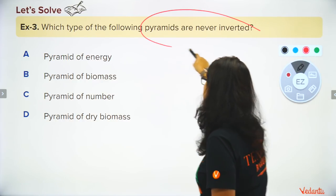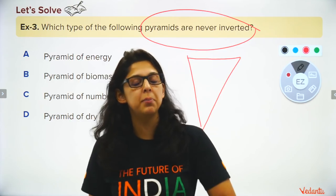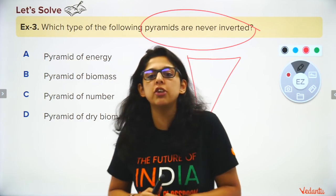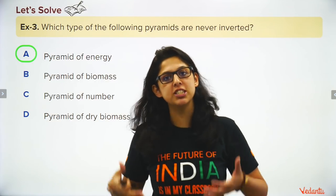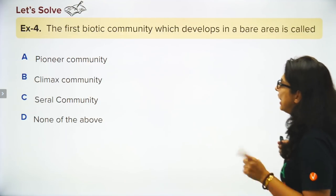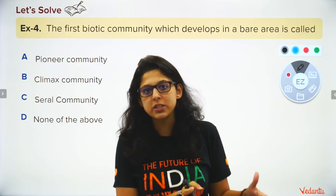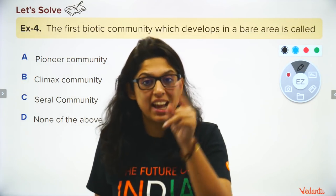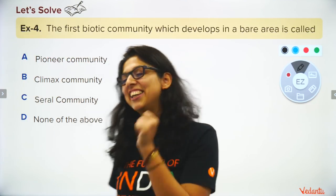Which pyramid is never inverted? The pyramid of energy — because grasses consume 90% of energy for themselves and give only 10% to the next trophic level. For example, if grasses make 1000 joules, the cow gets 100 joules, and the lion gets only 10 joules. This is the 10% law — energy always decreases upward, so the pyramid of energy is never inverted.